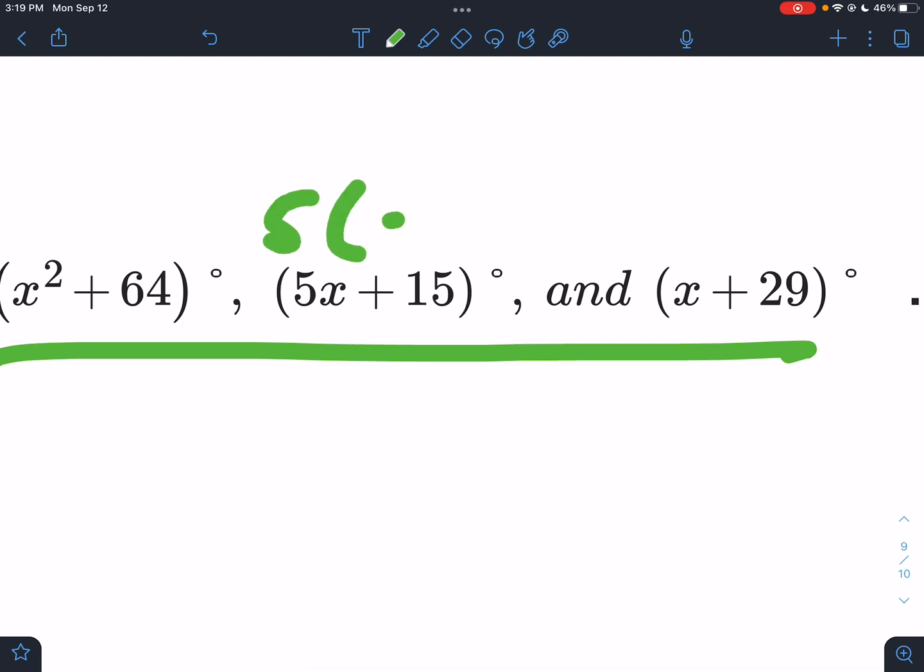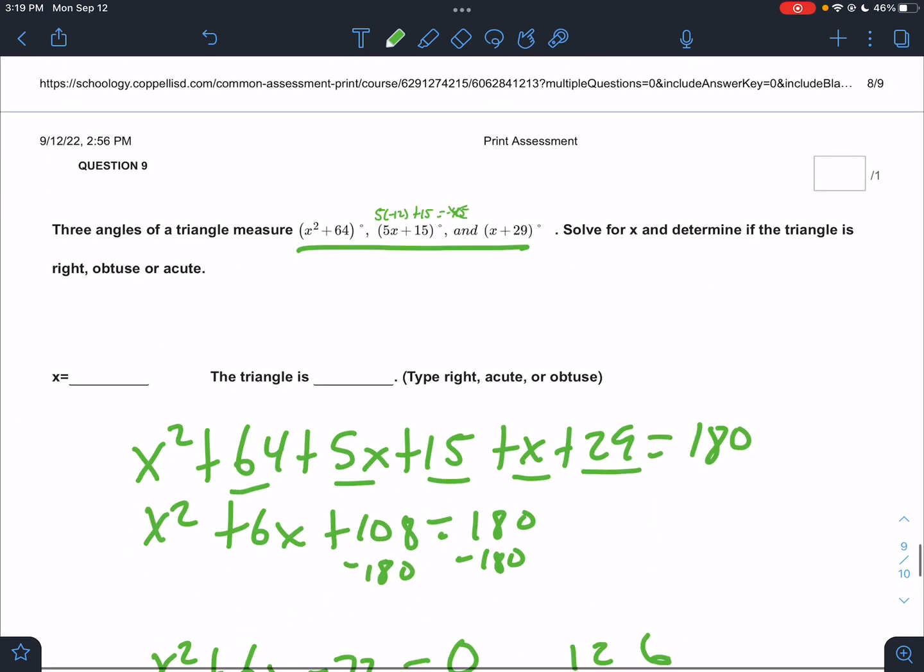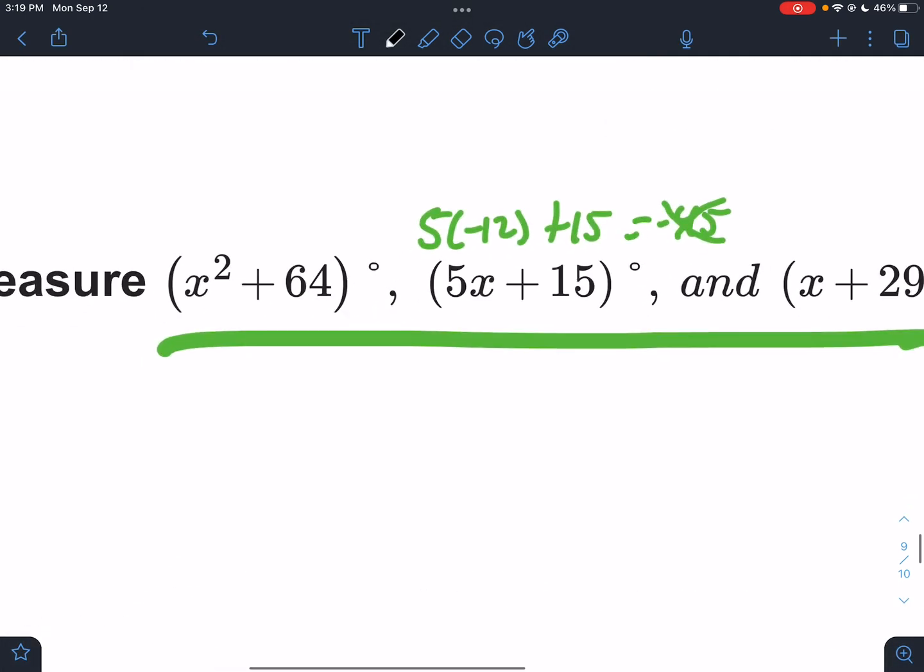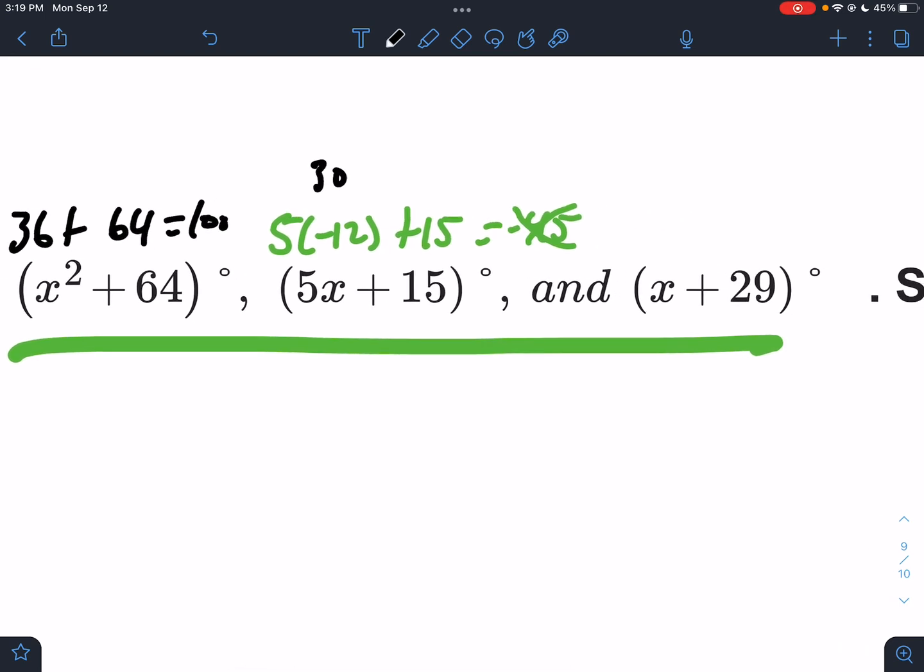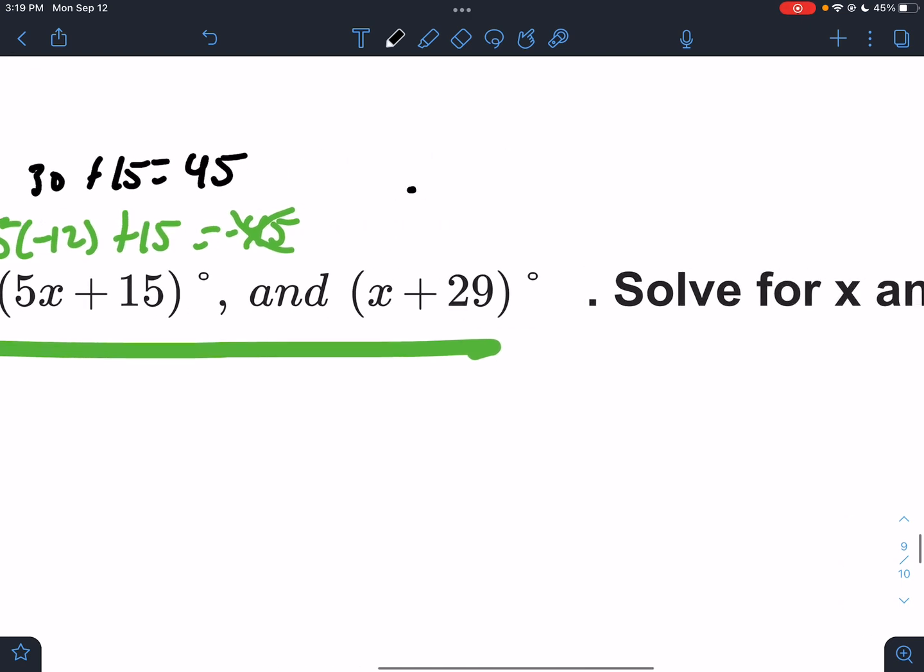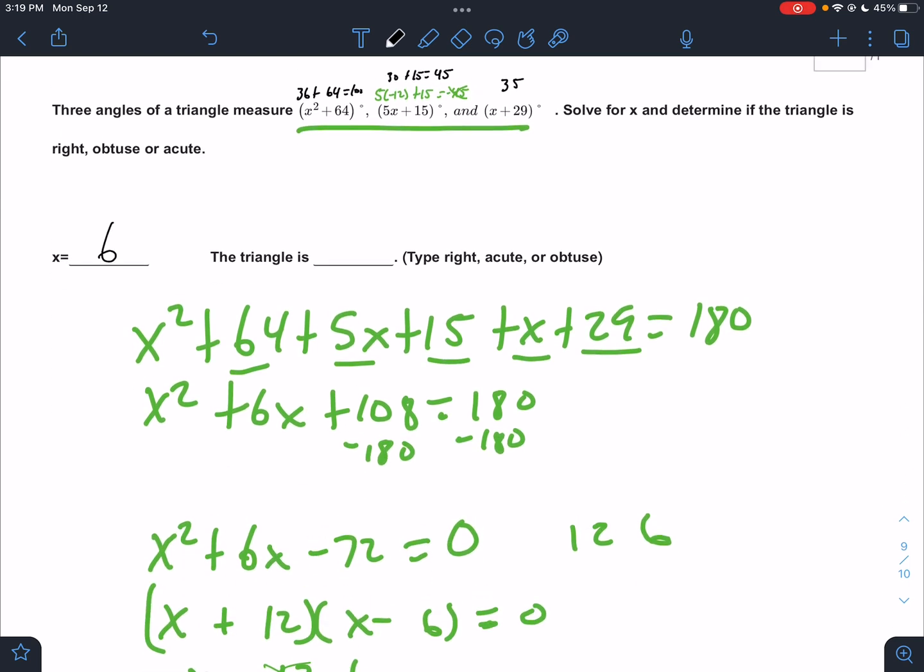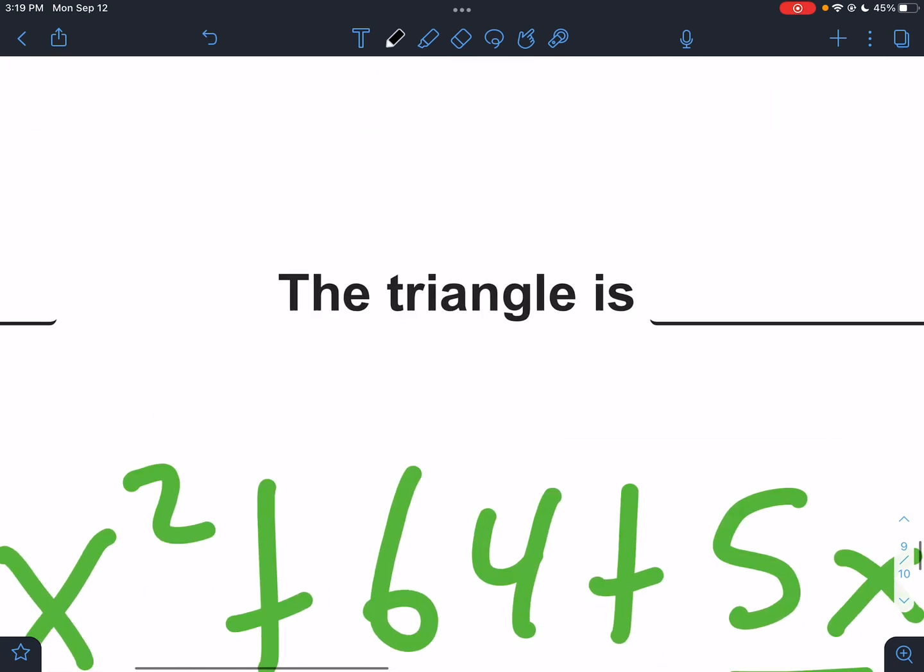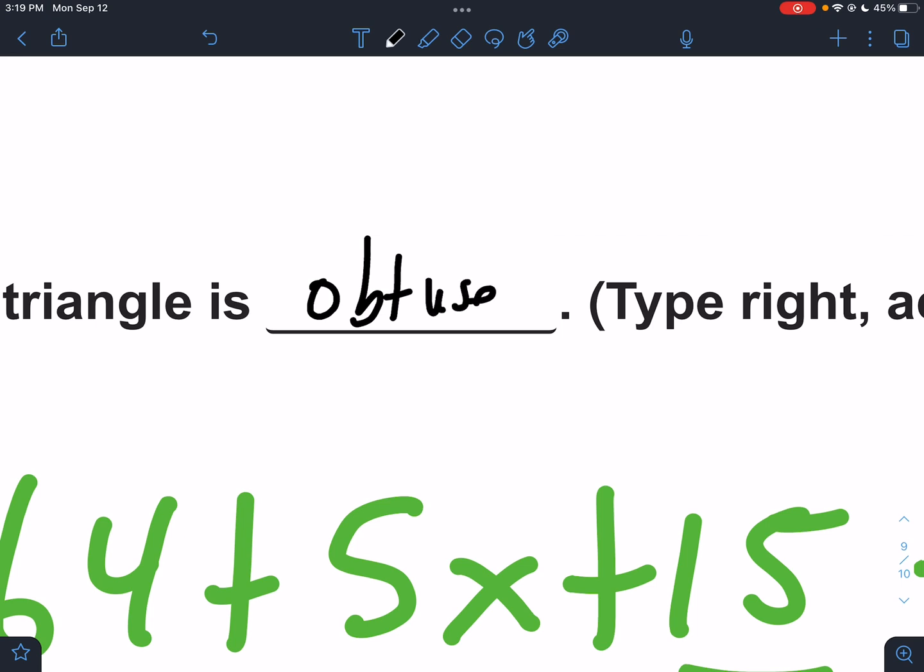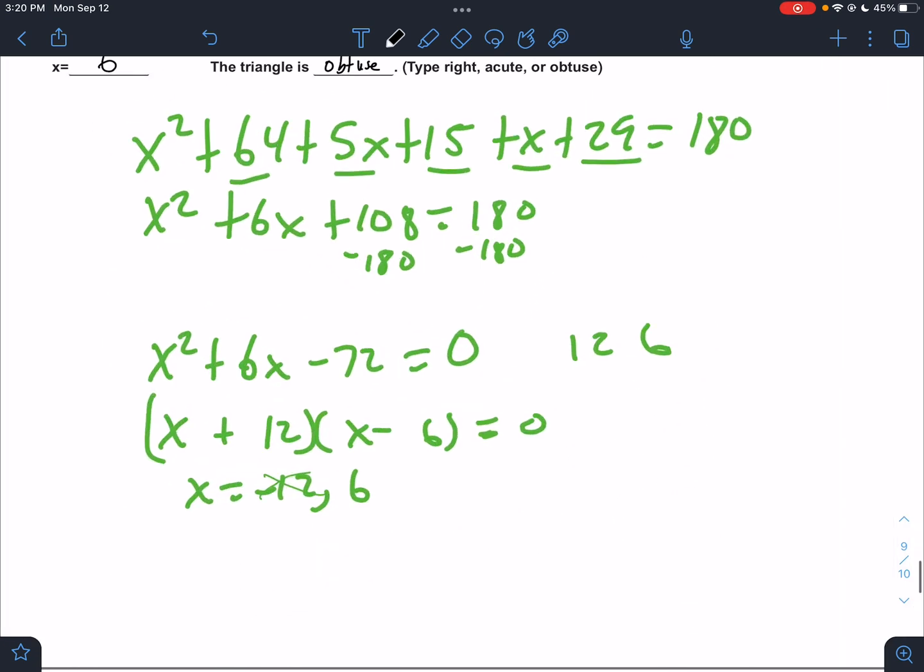So I've got to try both answers out. Do I see any issues immediately? Yes. If I plug in negative 12 here, that's going to be no good. 5 times negative 12 plus 15 is going to be a negative answer. It can't be that. So the negative 12 is out. Let's try 6. Does 6 work everywhere? If I plug in 6, I would have 36 plus 64. That's 100. That's okay. If I plug in 6, I would have 30 plus 15. That's 45. Plug in 6, I would have 35. Those are great. So x must be 6. And the triangle would be, well, if I have this 100 degree angle here, that would make it an obtuse triangle. All right guys. Hopefully that made sense.